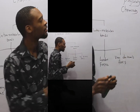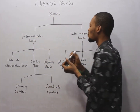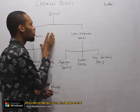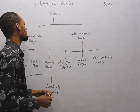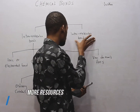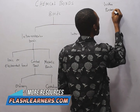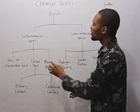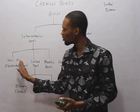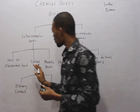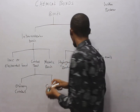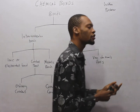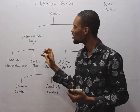Intramolecular bonds are bonds within molecules, and they account for the chemical properties of compounds. Intermolecular bonds are bonds between molecules and are mainly responsible for physical properties. Intramolecular bonds are divided into ionic bonds (also called electrovalent bonds), covalent bonds, and metallic bonds. Intermolecular bonds include hydrogen bonding, London forces, and van der Waals forces.